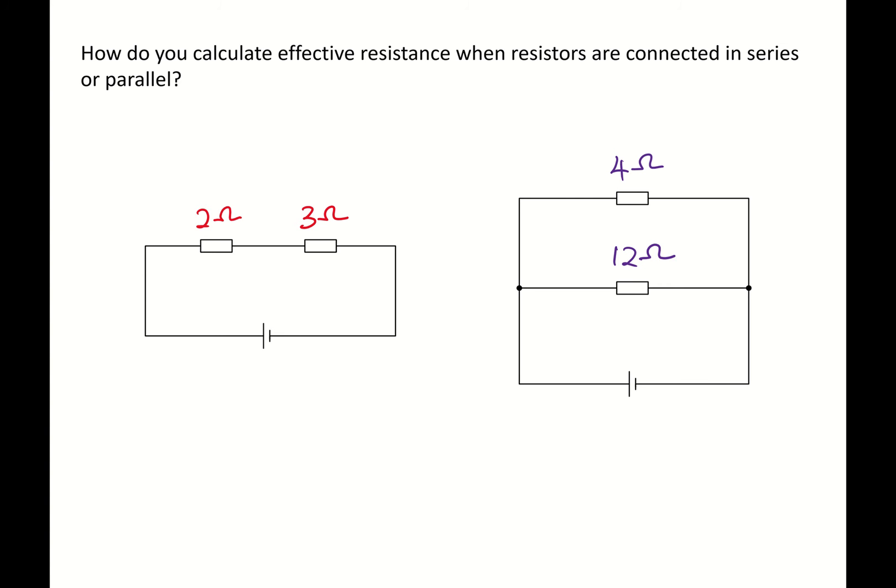Now let's take a look at the circuit on the left side. On the left side, you look at two resistors, 2 ohms and 3 ohms. Now before we determine whether it's connected in series or parallel, we have to identify first the current flow.